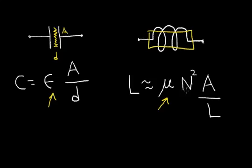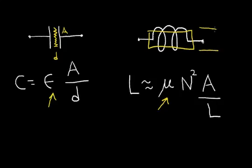These other terms are like the capacitor, but they are properties of the geometry of the inductor. N is the number of turns — if I look at this inductor, it looks like that's about a little over two turns. The number of turns gets squared, and that's multiplied by the cross-sectional area of the inductor, which would be the area inside of this coil. L is the length of the inductor, which would be this dimension.